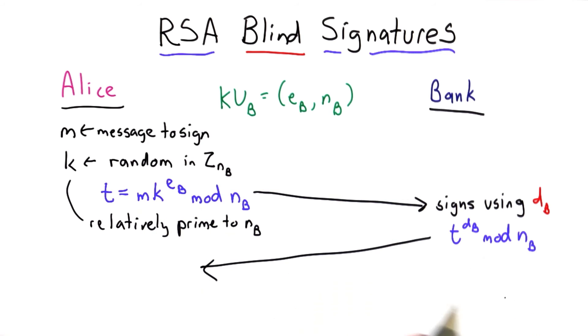So as far as the bank is concerned, it just signed a random value, and it sent that back to Alice. Is there anything Alice can do with this that's useful?